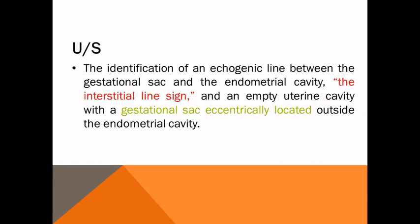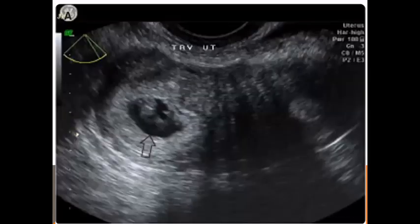How to diagnose? Diagnosis is difficult by ultrasonography. We should show the line between the gestational sac and the uterine cavities. The sac is outside the endometrial cavity in the lateral aspect. This is called the interstitial line sign with an empty uterine cavity.